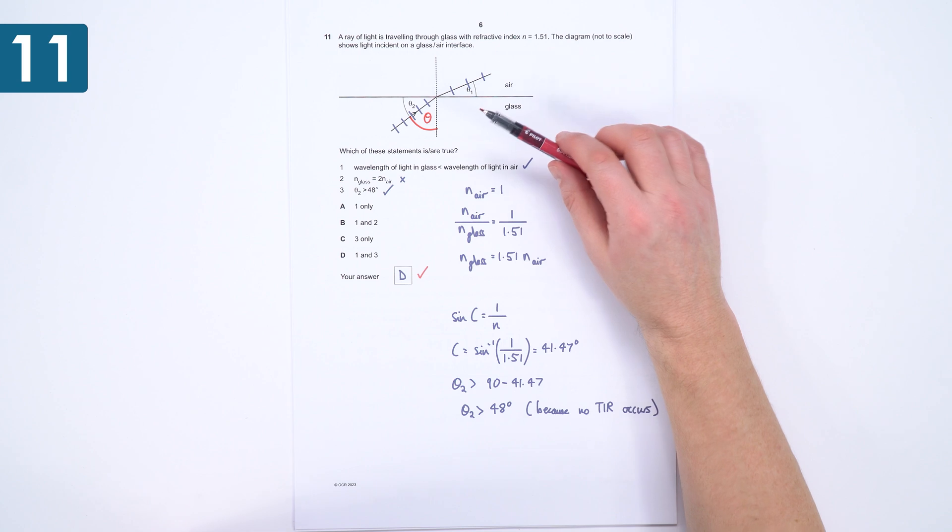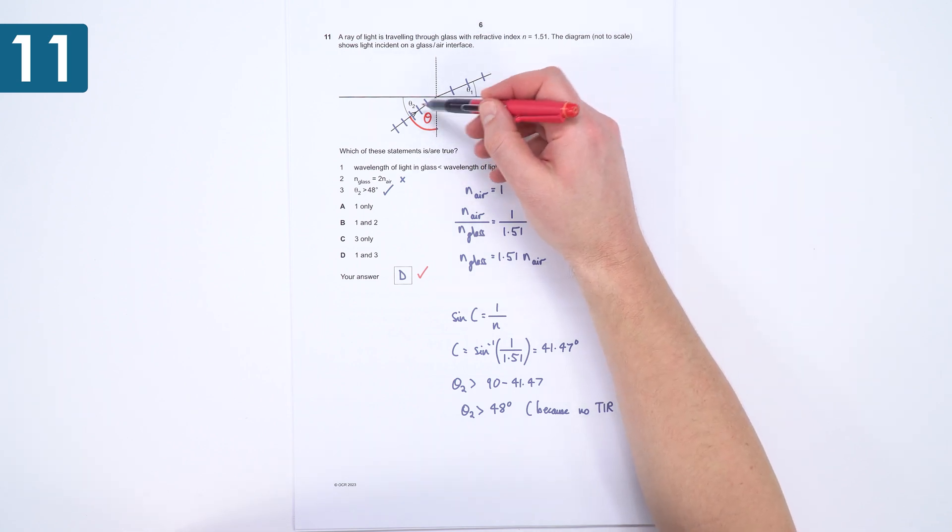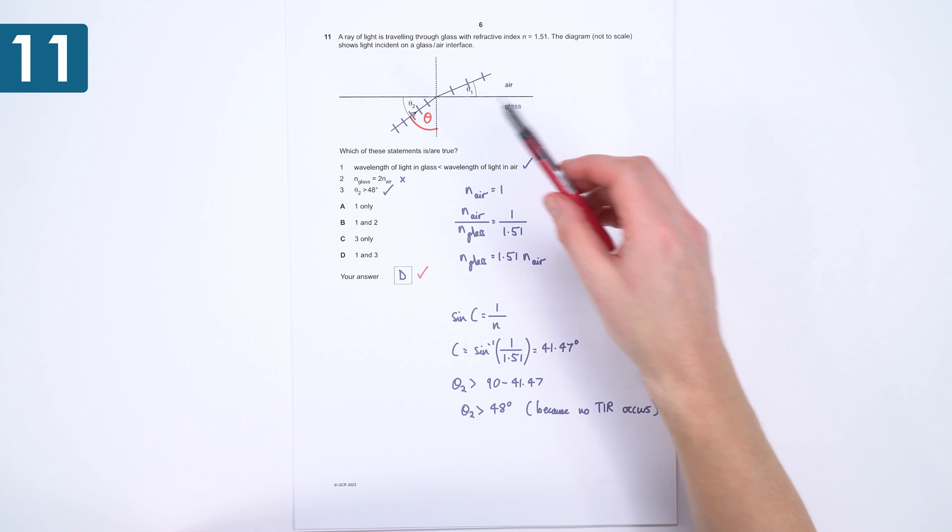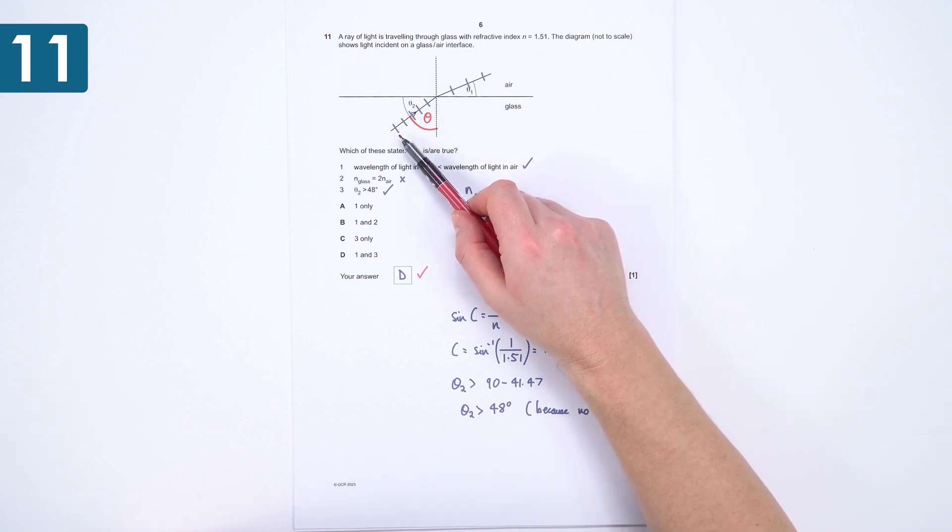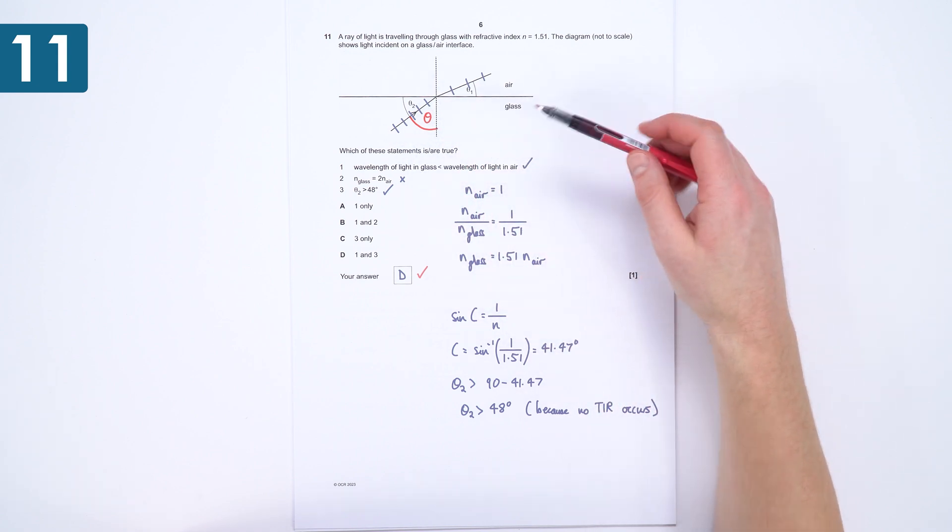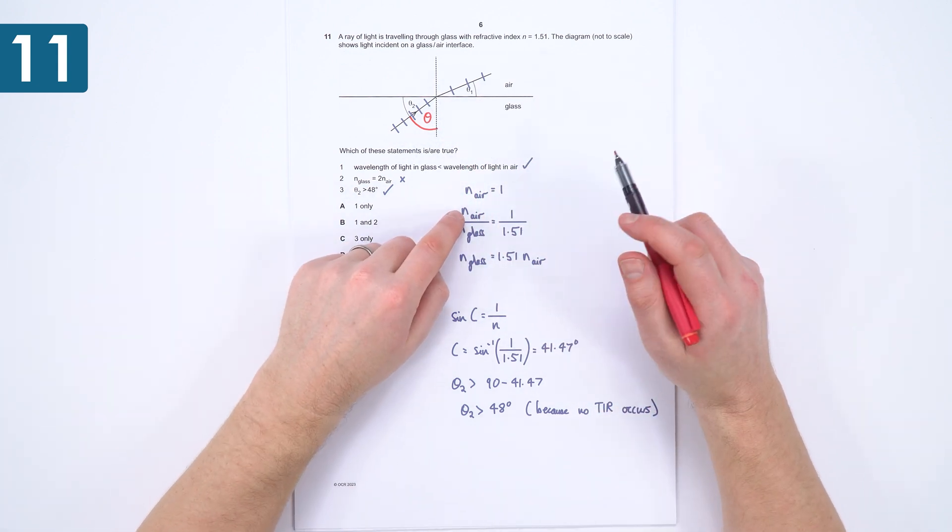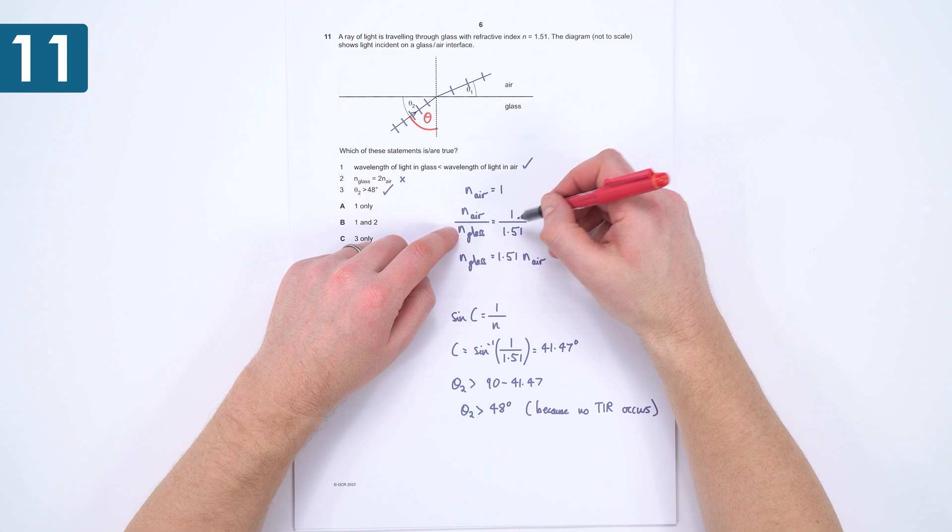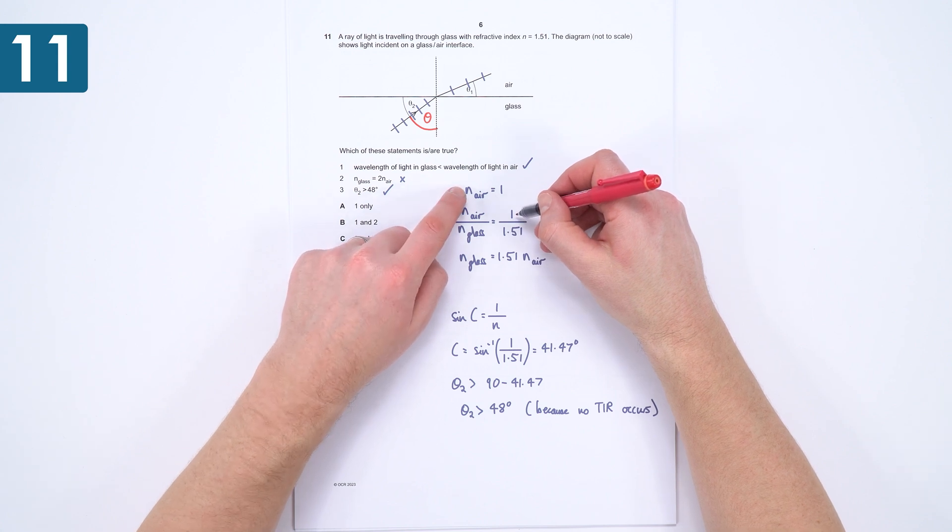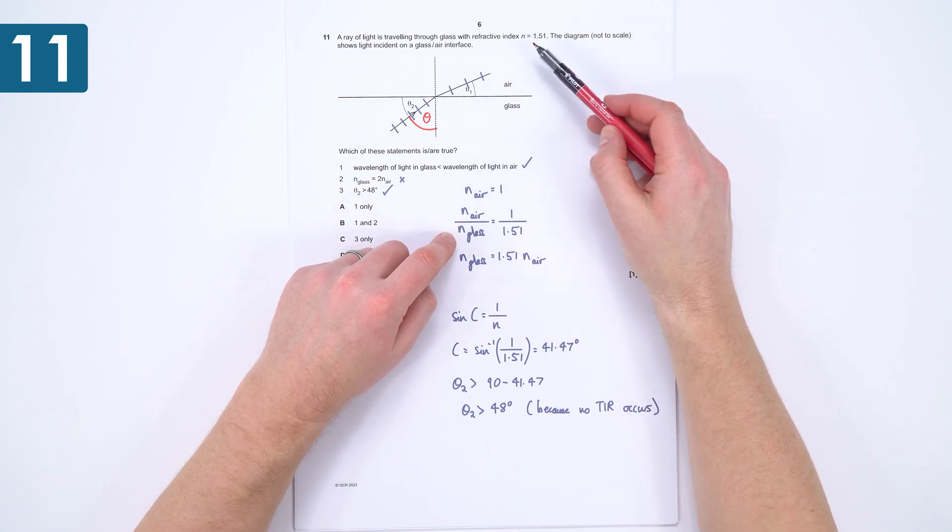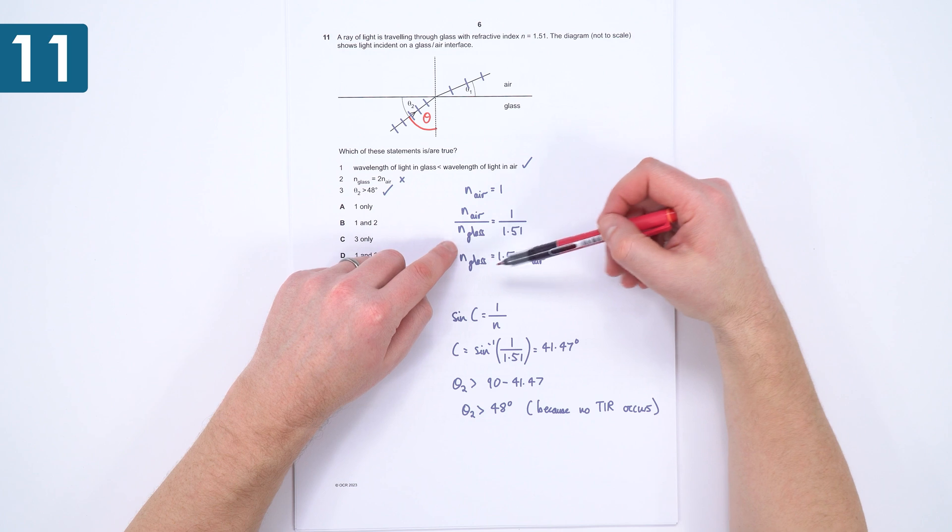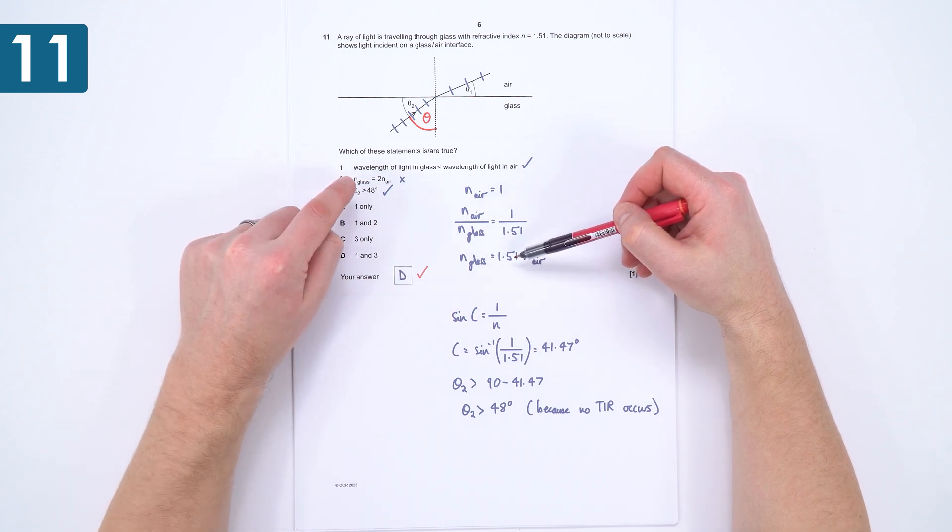For number 11, which only about 33% of students got correct, this thing here was where they made the mistake. Now of course we know that the wavelength is going to be shorter when the light is travelling slower in glass. We also know from the fact that n air over n glass is going to be 1, the refractive index in air, divided by 1.15, the refractive index in glass. So we can just rearrange that to make this, so that means number 2 can't be correct.